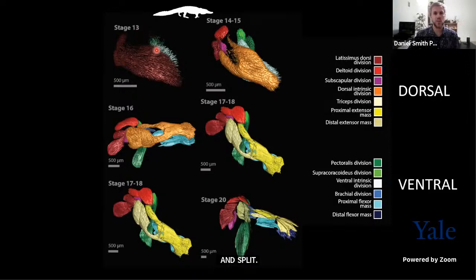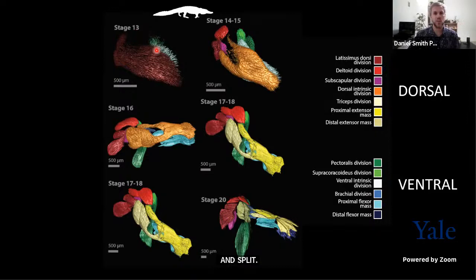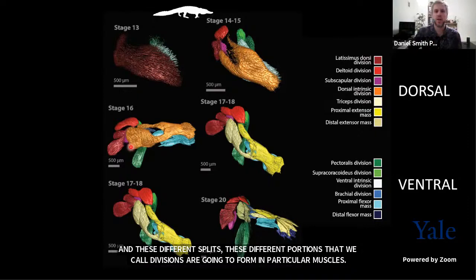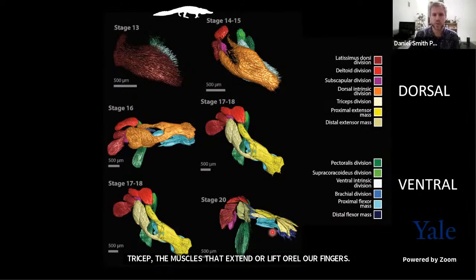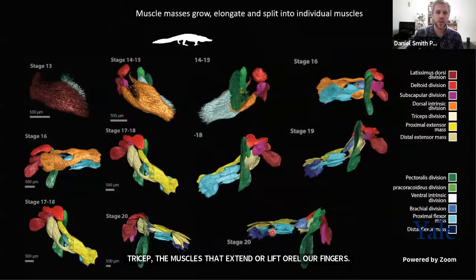These different splits — portions we call divisions — are going to form particular muscles. For example, a particular portion is going to give rise to muscles of the shoulder; another in darker red will form some muscles of the back. This orange portion of muscle will separate into other subdivisions giving rise to the triceps musculature and muscles that extend or lift the fingers. On the other side, we have muscles that will depress the hand or perform chest movement.